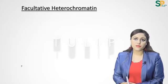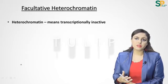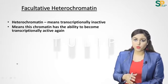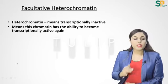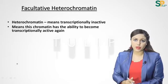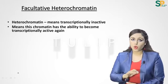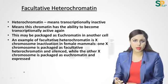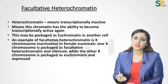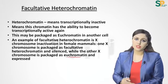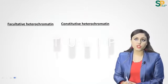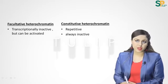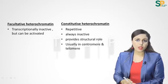X chromosome inactivation is also known as facultative heterochromatin. Heterochromatin means transcriptionally inactive; facultative means optional — it can be activated again. In female mammals, one X chromosome is packaged as facultative heterochromatin and is silenced, while the other X chromosome is packaged as euchromatin and is expressed.